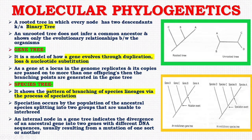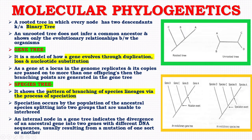A gene tree is a model of how a gene evolves through duplication, loss, and nucleotide substitution. This is an example of an evolutionary gene tree. As a gene at a locus in the genome replicates and its copies are passed on to more than one offspring, branching points are generated in the gene tree.